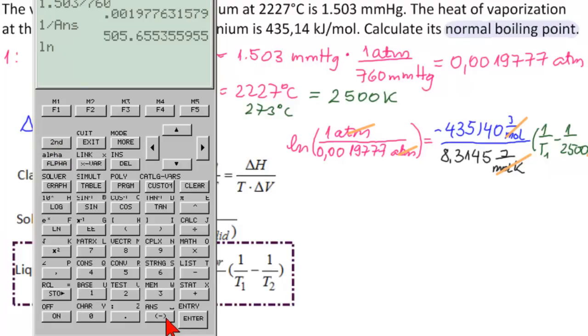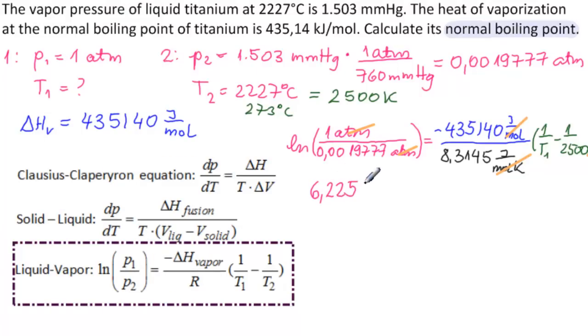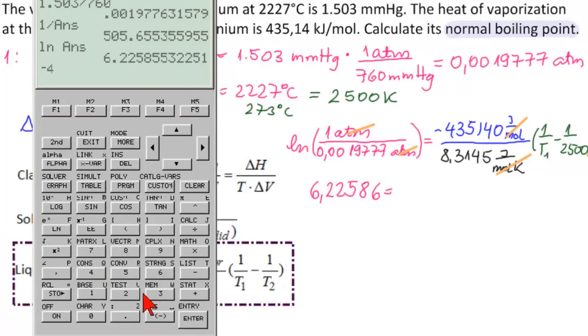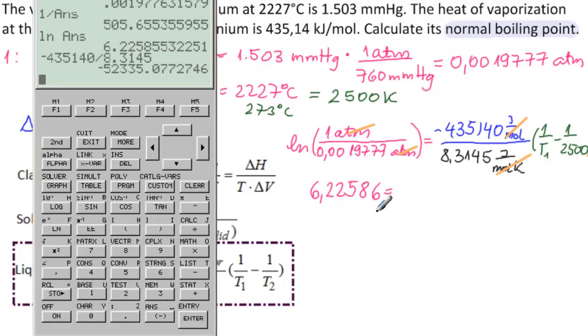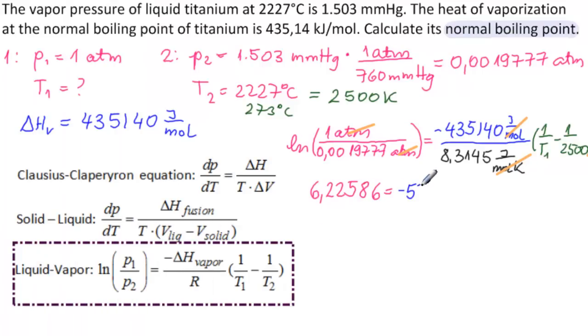And we get 6.22586. So this is 6.22586 equals minus 435140, divided by 8.3145. So that's minus 52335.1. And then we have our 1 over T1, minus 1 over 2,500.